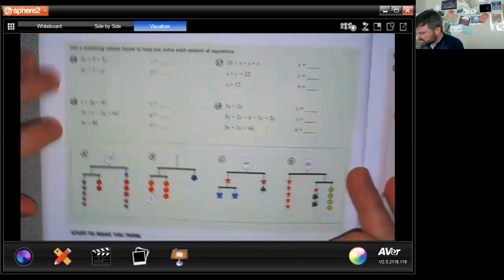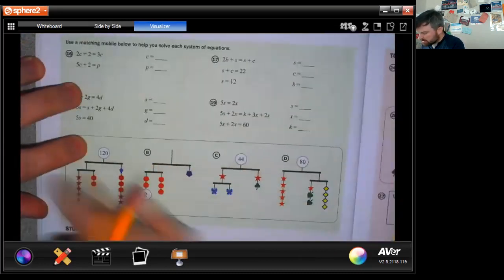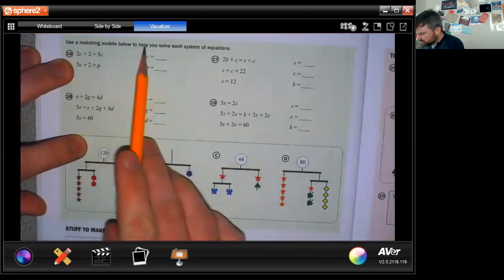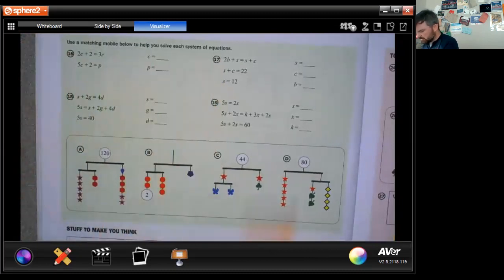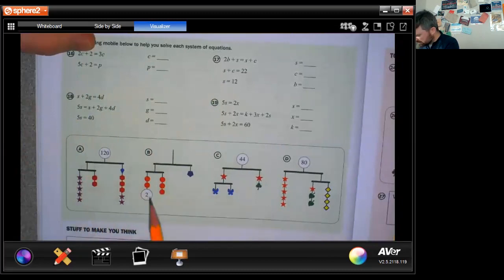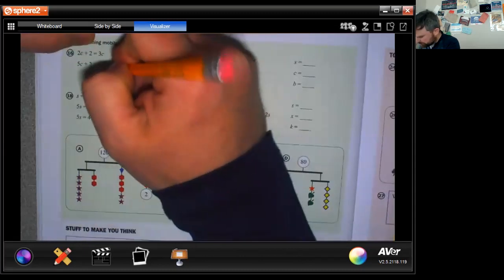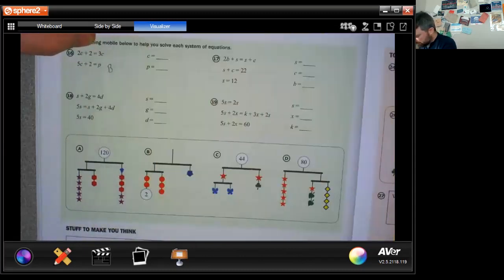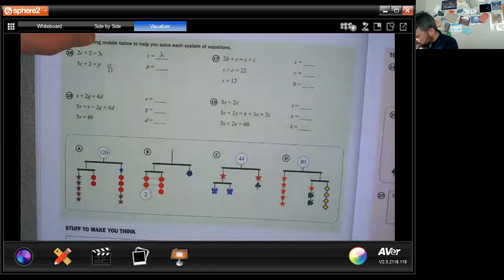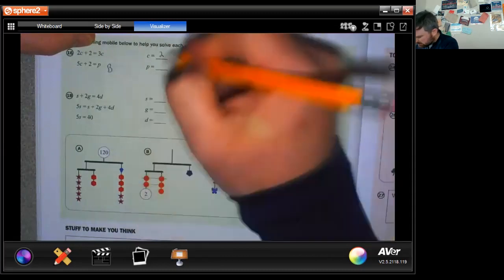So 16 through 19 here. Match, use a matching mobile below to help you solve the system. So we've got some mobiles here below. We're going to match it up and solve. So I have two circles plus two. So this is the only one, I think, with two circles plus two equals three circles. And five circles plus two equals pentagon. So this is B. Let's go ahead and try to solve B. So these are going to cancel. A circle must be two. So I get two, four, six, and this is six. So a pentagon is 12. We're just checking the answers as we go here.